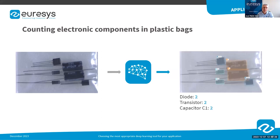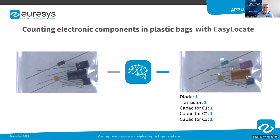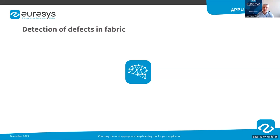Now suppose that we need to count objects of various types that are placed in bulk and possibly overlapping each other. We also need to identify each object. When we have to count objects, identify them, and they may overlap — this is typically a job for EasyLocate.